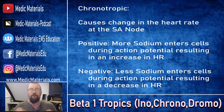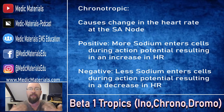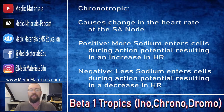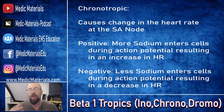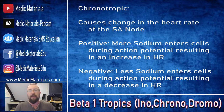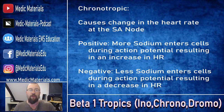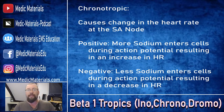Next we have chronotropic. Chrono means time, so chronotropic responses deal with increasing or decreasing the heart rate at the level of the SA node — the sinoatrial node — the pacemaker of the heart. A positive chronotropic drug causes more sodium to enter the cells of the heart muscle during the action potential, resulting in an increase in heart rate. A negative chronotropic response causes less sodium to enter those same cells, which decreases the heart rate.